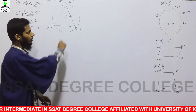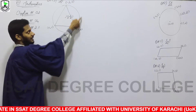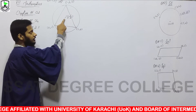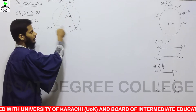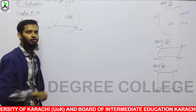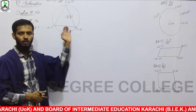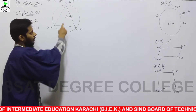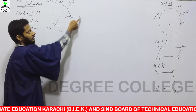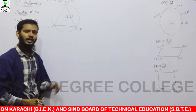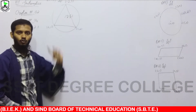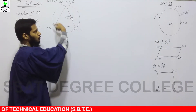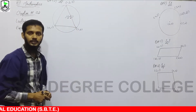आपने इस बात को proof करना है कि ये point इस circle का center है — जो circle इस triangle को circumscribe कर रहा है, यानी उसके vertices से pass हो रहा है और उस triangle को घेरे हुए है. अगर ये वाकई circle का center है, तो अगर आपको radius की definition याद हो, center से लेके circle पे मौजूद किसी भी point तक का distance same रहता है.